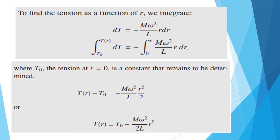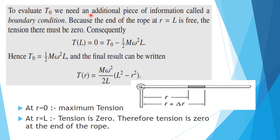Now we find T₀. To evaluate T₀ we need an additional piece of information called the boundary condition. At the end of the rope, r equals l, the rope is free, so the tension there must be 0. Applying this boundary condition by substituting r equals l: T(l) equals 0, which gives 0 equals T₀ minus half m·omega squared·l squared over l. Therefore T₀ equals half m·omega squared·l.